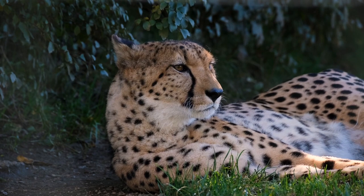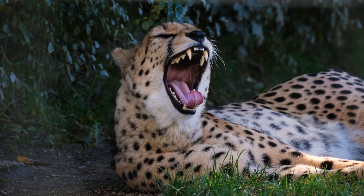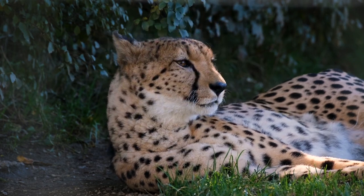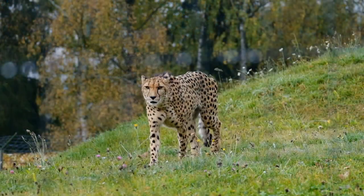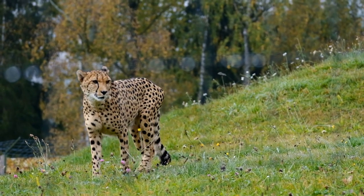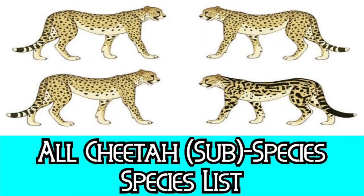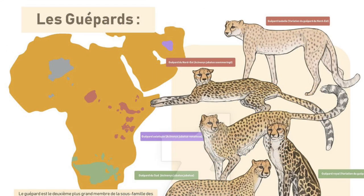The cheetah's numerous specialized features led early taxonomists to believe it split from other cat species early in the evolutionary history of the Felidae family. It has been recognized as the only species of the genus Acinonyx since the early 1900s. Cheetahs are commonly classified into five subspecies: A. jubatus jubatus in southern Africa; A. jubatus fearsoni (including A. jubatus velox and A. jubatus raineyi) in eastern Africa; A. jubatus soemmeringii from Nigeria to Somalia; A. jubatus hecki in northwestern Africa; and A. jubatus venaticus from Arabia to central India.